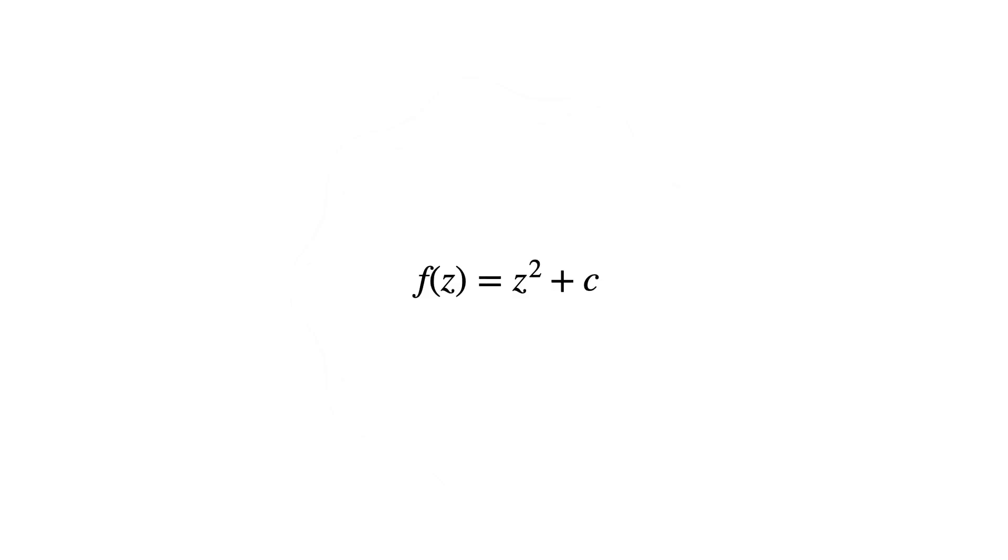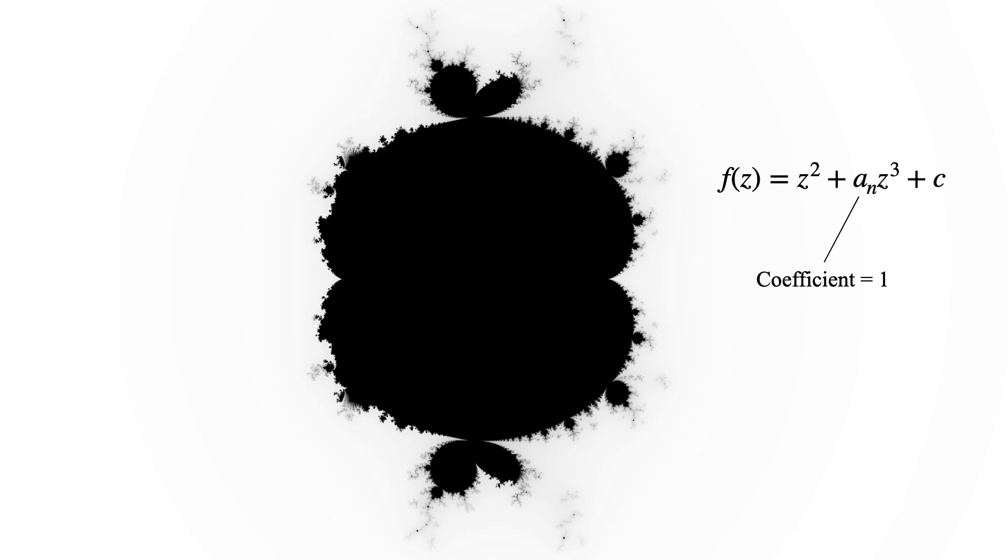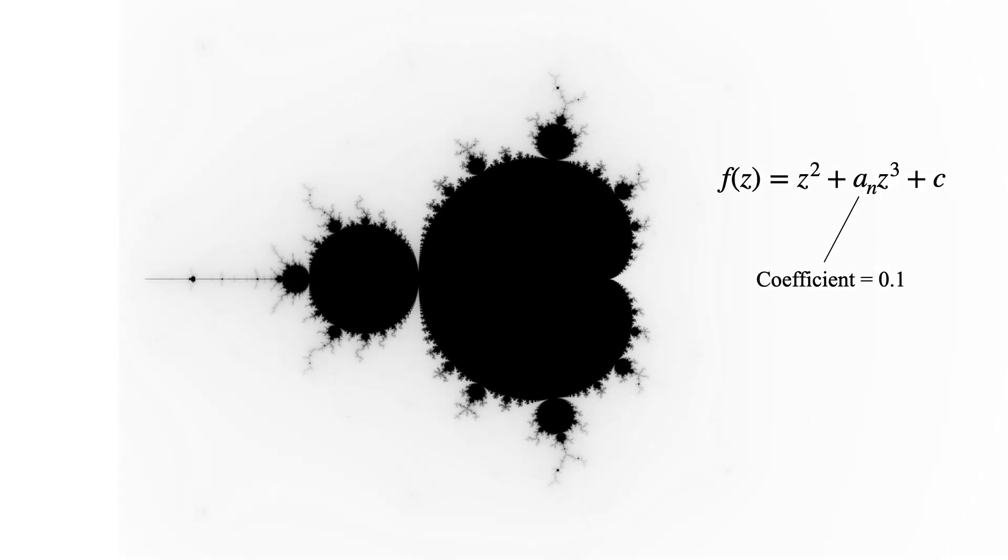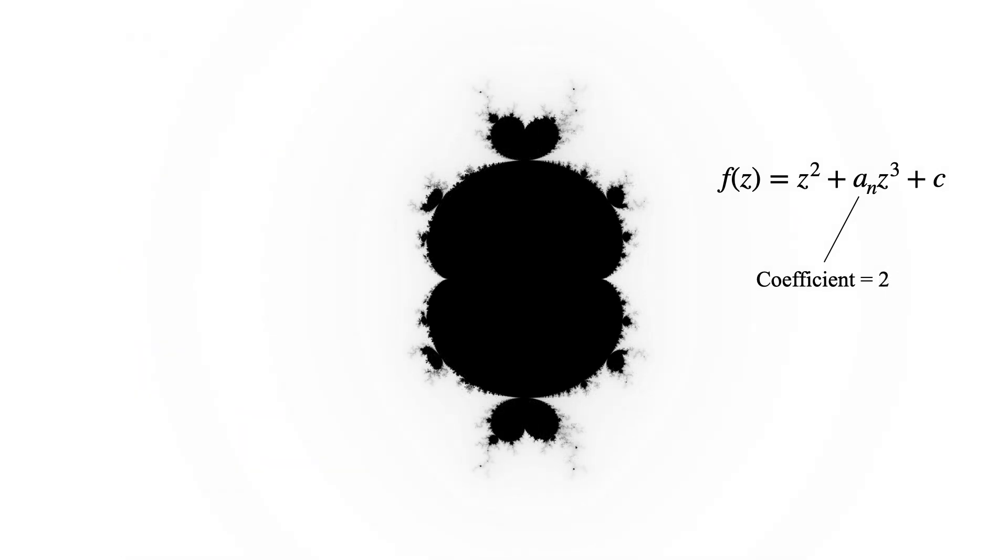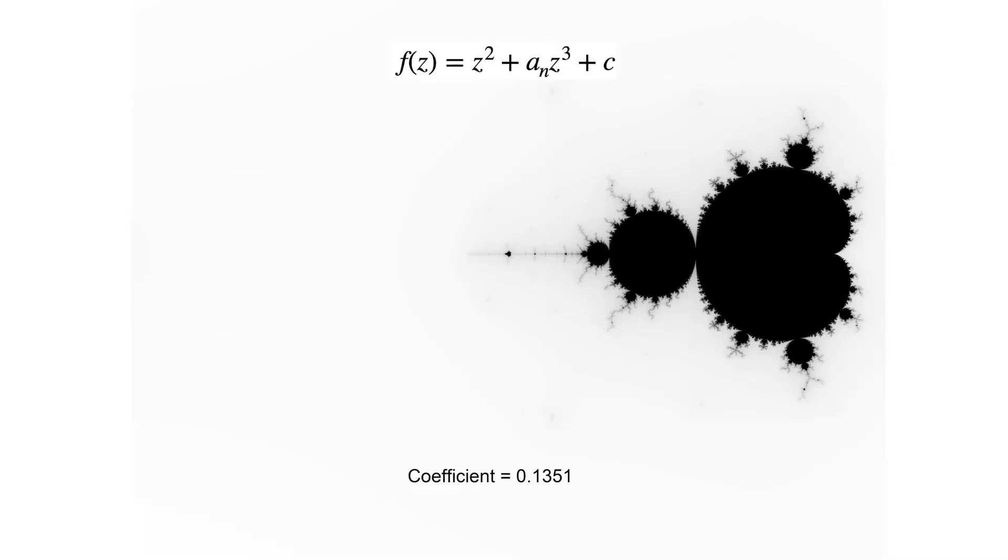So let's go back to the original Mandelbrot set, and this time add a z³ term. What about if we change the coefficient to 2? These might not seem so interesting, but something incredible happens in the range between 0.13 to 0.2.